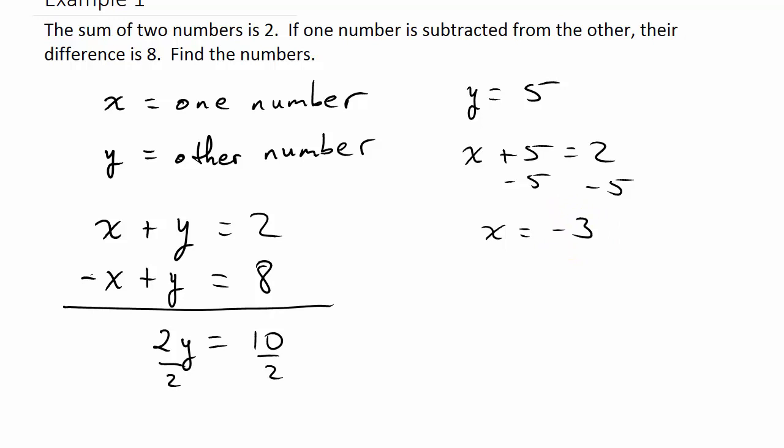So the two numbers are negative three and five.